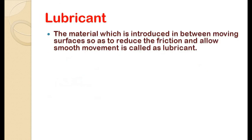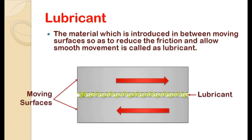We will start with the definition of lubricant. A lubricant is a material that is introduced between moving surfaces relative to each other so as to reduce friction and allow smooth movement. If you want to learn more about the lubrication process and its types, please check my other video on lubrication and its types.